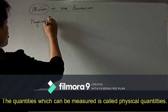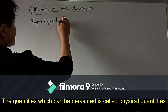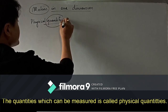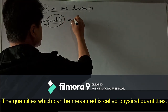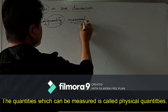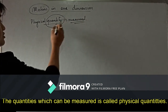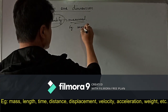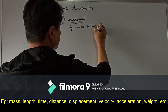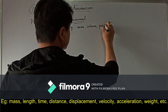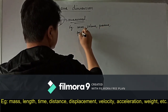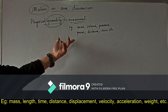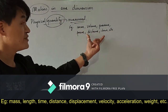In the previous chapter we covered physical quantities. A physical quantity is a quantity which can be measured. Examples include mass, volume, pressure, force, distance, time, etc. Any quantity which can be measured is a physical quantity.